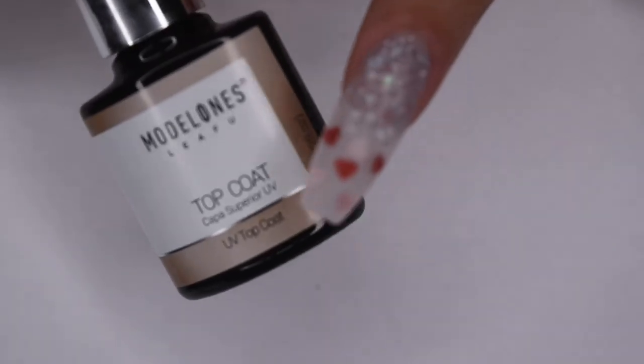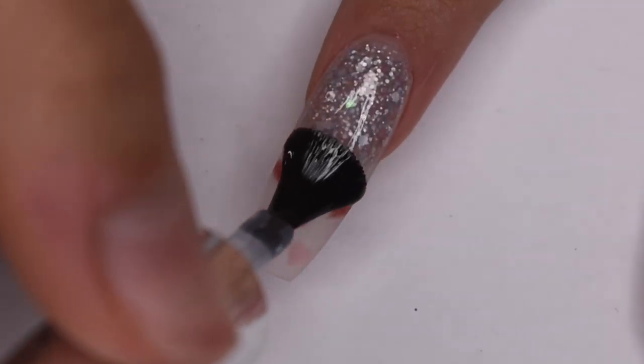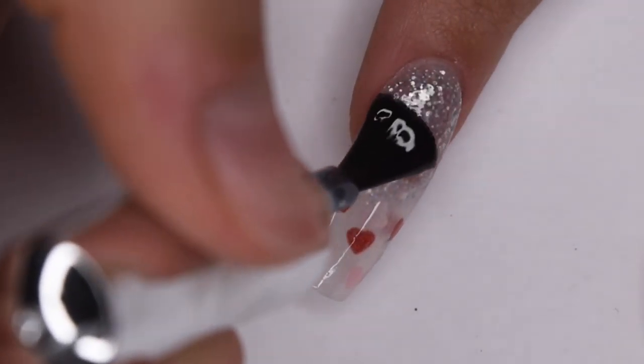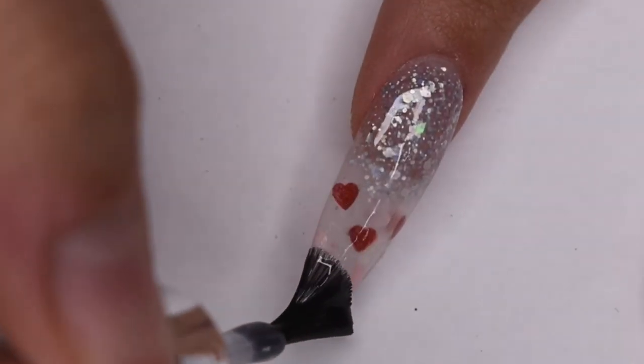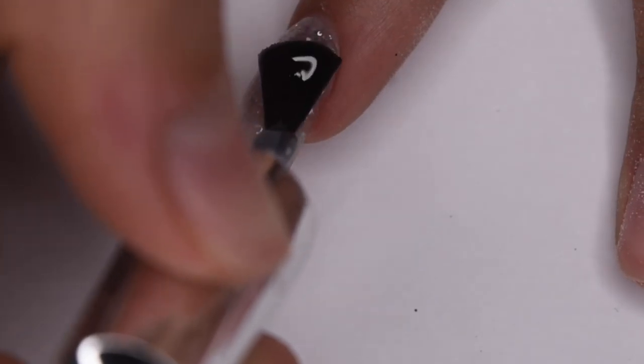And now I'm going to apply a layer of my Model 1's gel top coat. And this will really bring out the clarity of the polygel as well as add a beautiful shine to the glitter and heart pieces. So after applying my layer of top coat, I cured for 30 seconds in my LED lamp.